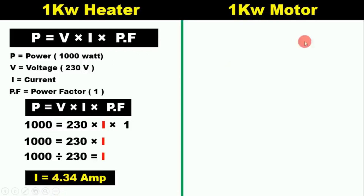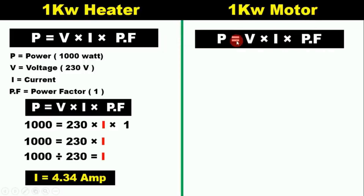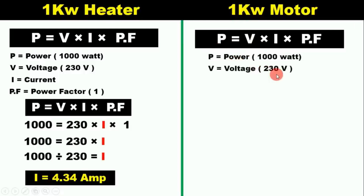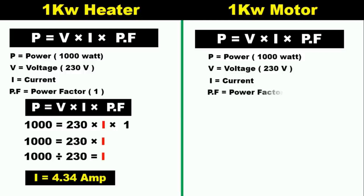Now we have to find the current value for the motor. The motor of 1 kilowatt here is also single phase, so we use the same formula: P equals V into I into PF. Power is 1000 watts, voltage is 230 volts. Now what is the power factor? The motor is an inductive load, and the power factor of an inductive load can never be 1 — it will always be less than 1. If the power factor is not given, you can consider it as 0.8. So we take power factor as 0.8.